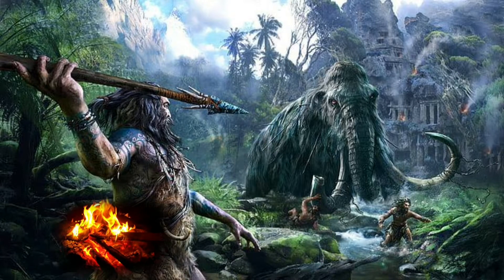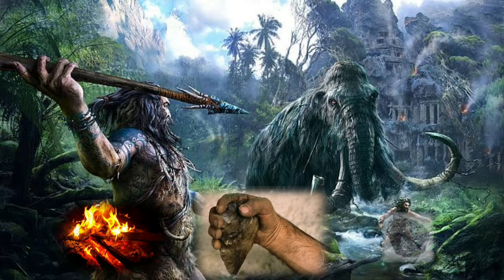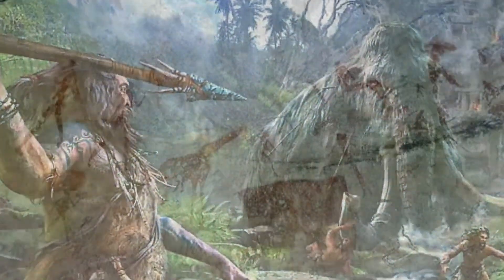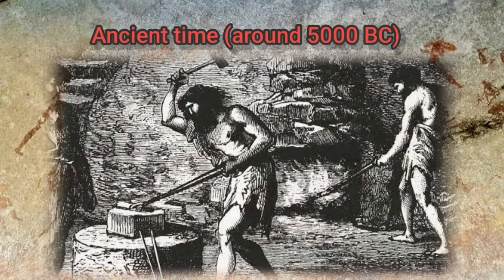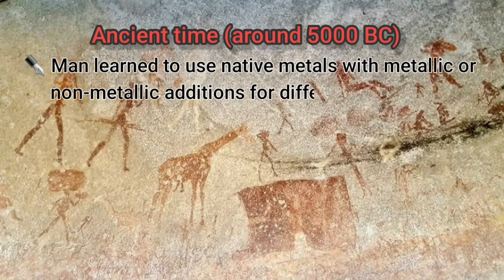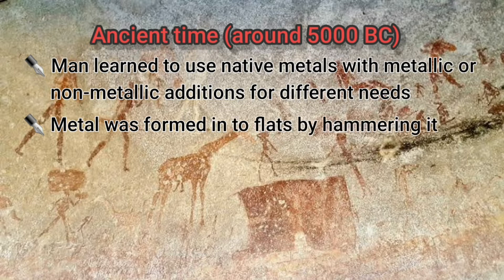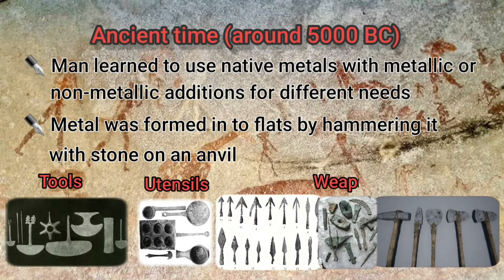Let me take you back to very ancient times, around 5000 BC. Man learned to make use of fire, stone and metal for his survival. In those days, man learned to use very crude methods to extract native metals for some specific use. He also learned to make flat pieces by hitting the metal with a stone on an anvil. These flat metals were mainly used to make small tools, utensils and weapons.